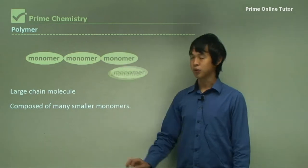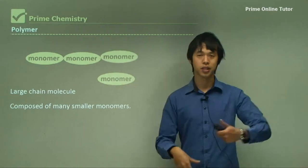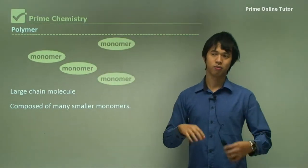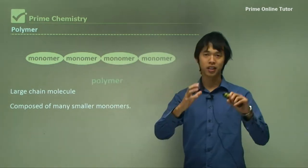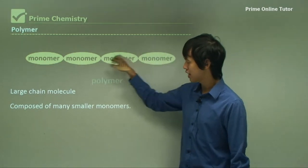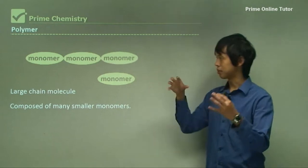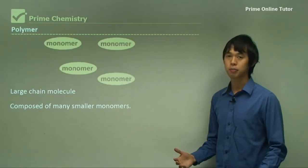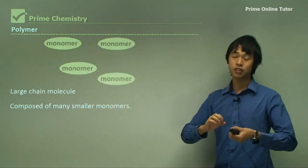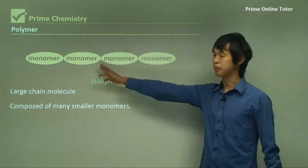What happens is we get each of these things called monomers. 'Mono' means one, 'poly' means many. So we take one monomer and put it into a chain of many — a polymer. You can even think of it like a normal chain, where each link in the chain is a monomer.